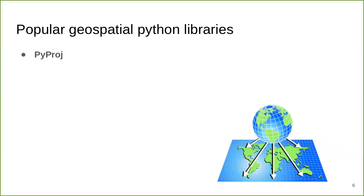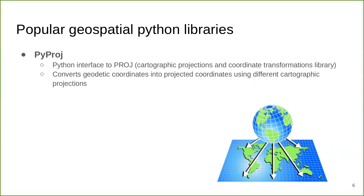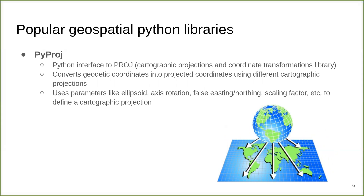PyProj is a Python interface to Proj, which is the Cartographic Projection and Coordinate Transformations library. It converts geodetic coordinates into projected coordinates using different cartographic projections. It uses parameters like ellipsoids, axis rotation, false easting and northing, and a scaling factor to define a cartographic projection.